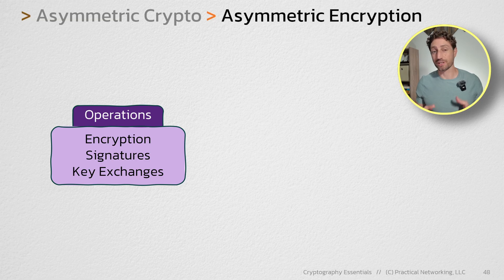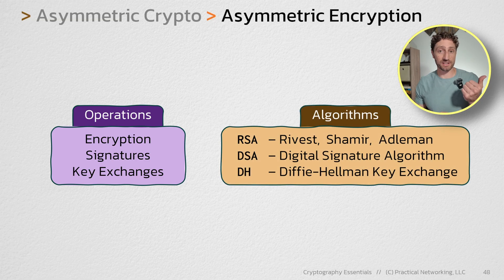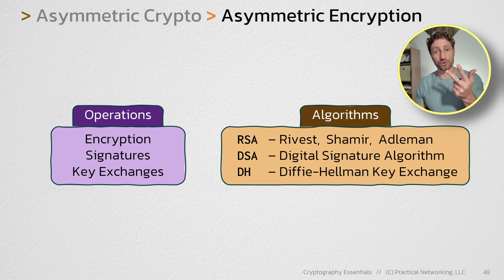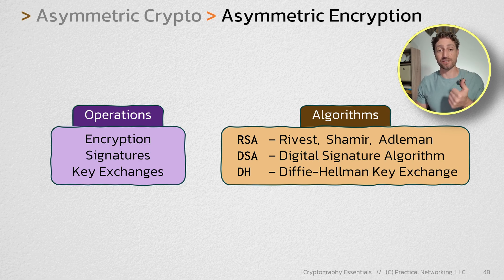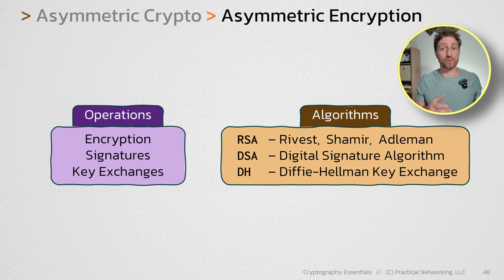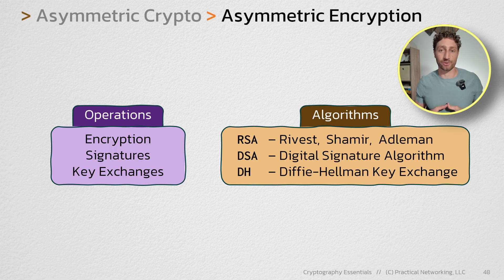We also mentioned that there are only three possible asymmetric algorithms: RSA, Diffie-Hellman, and DSA. And of those three, only one of them can do encryption, and that is RSA. So this lesson is going to be talking about both asymmetric encryption and the RSA algorithm.